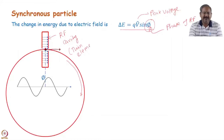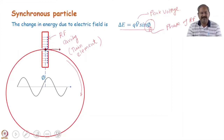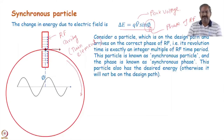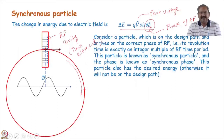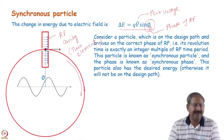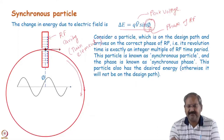Just as in transverse dynamics we treated the quadrupole as a thin element, here we take the RF cavity as a thin element - it is a point where, when the particle crosses, it gets some energy. Consider a particle exactly on the design orbit: x=0, x'=0, y=0, y'=0, meaning it follows the design trajectory and exhibits no betatron oscillations.